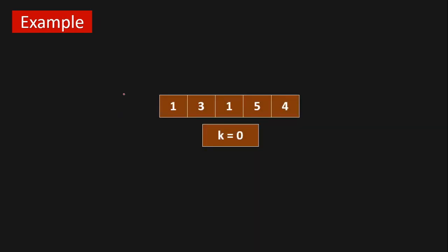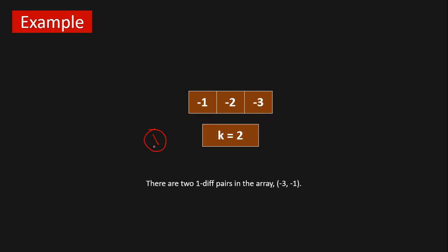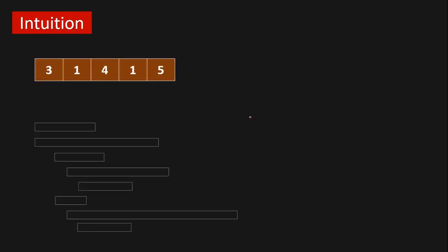If you are given this array and k equals to zero, then you have to return one because we have one k-diff pair, which is (1,1). If you are given this array and k equals to two, then we have to return one because the one k-diff pair is (-3, -1).